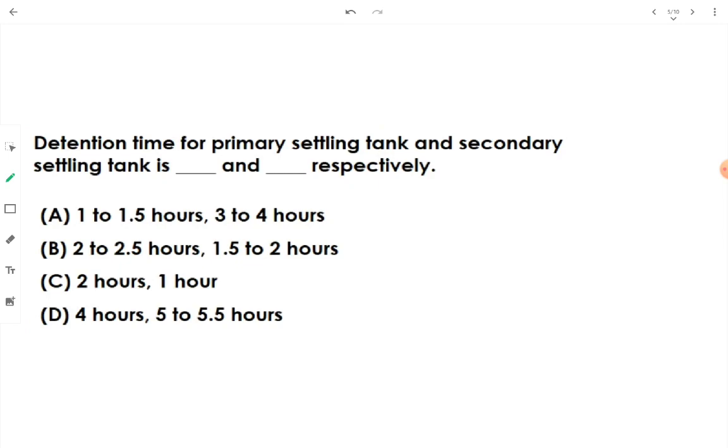Then, detention time for primary settling tank and secondary settling tank is fill in the blank and fill in the blank respectively. The answer is, for primary settling tank, the detention time is 2 to 2.5 hours. More time is taken by primary settling tank and less time is taken by secondary settling tank, which is 1.5 to 2 hours. The answer is option B. For PST, it is 2 to 2.5 hours and for SST, it is 1.5 to 2 hours.